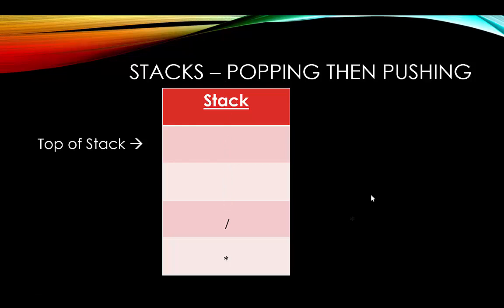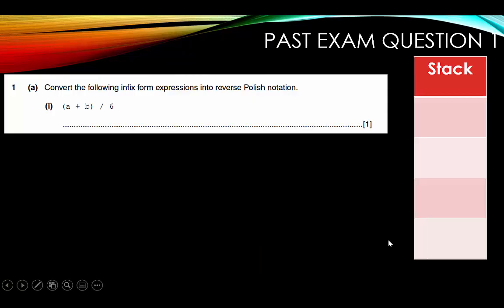Now let's look at some past exam questions. Our first problem is (a + b) / 6. The first character is an open parentheses, so I push that to my stack. Then I have 'a' — that is not a mathematical symbol, so 'a' goes into my string. Then I have a plus sign; because I have an open parentheses I keep pushing to the stack, so the plus sign goes onto the stack.